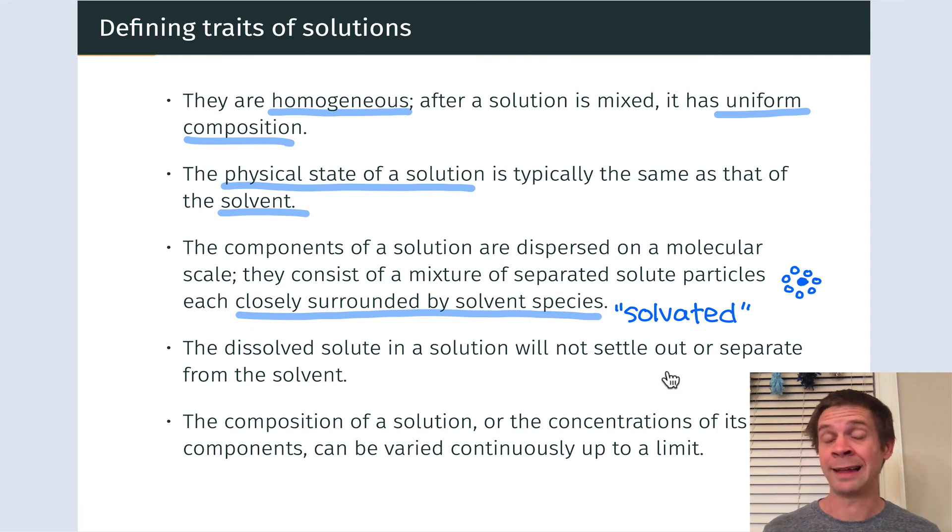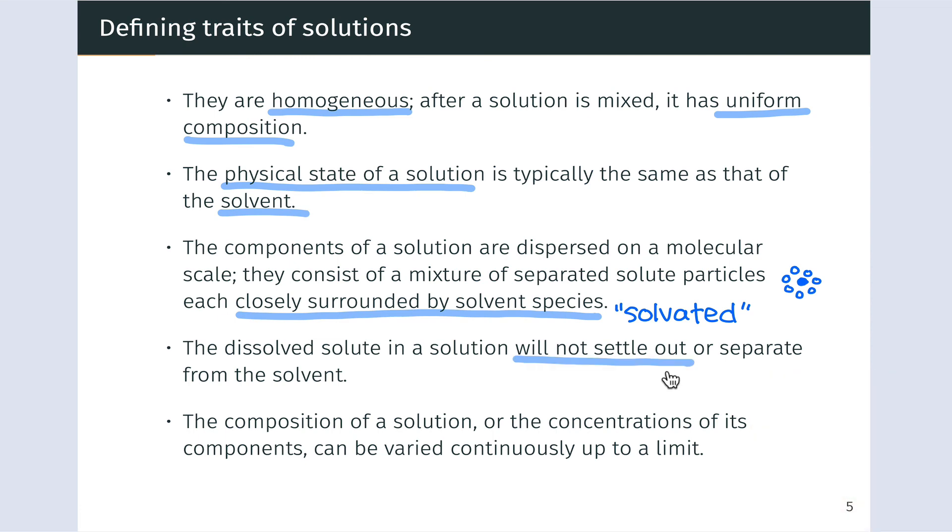Dissolved solute will not settle out or separate. This distinguishes solutions from suspensions. And finally, the composition of a solution can be varied. We can change the composition of a solution by varying how much solute is dissolved. So the concentration of solute can vary continuously, but only up to a limit. And that limit is known as the solubility or solubility limit.